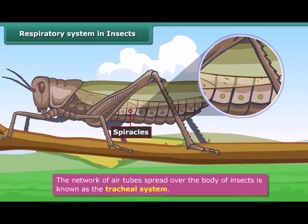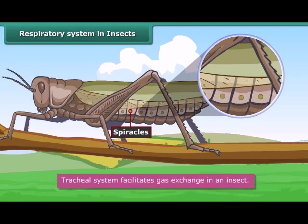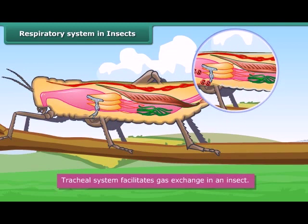The spiracles open into a network of thin air tubes spread over the body of an insect. These tubes are known as the trachea, and they facilitate gas exchange. Oxygen reaches the cells through the tracheal system, and carbon dioxide is received from the cells by the tracheal system and expelled from the insect body through spiracles.